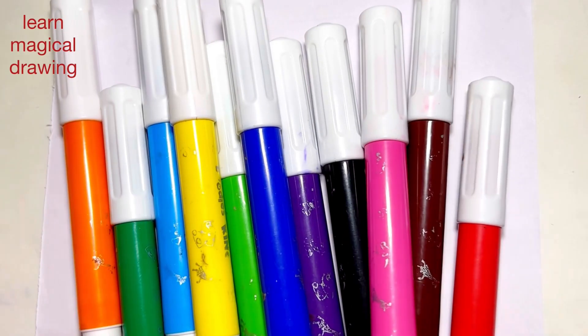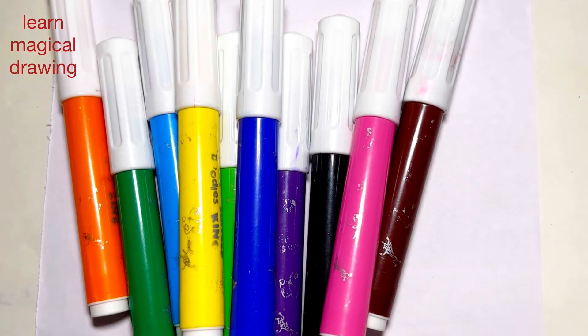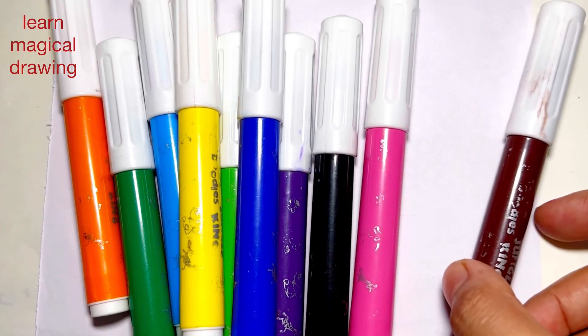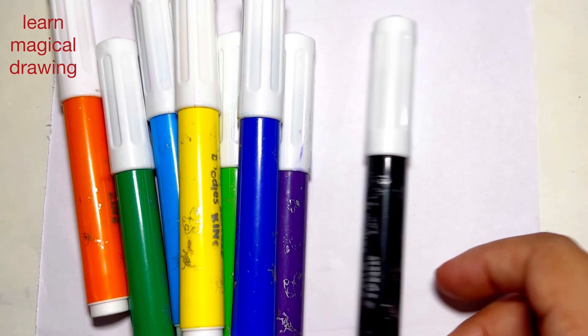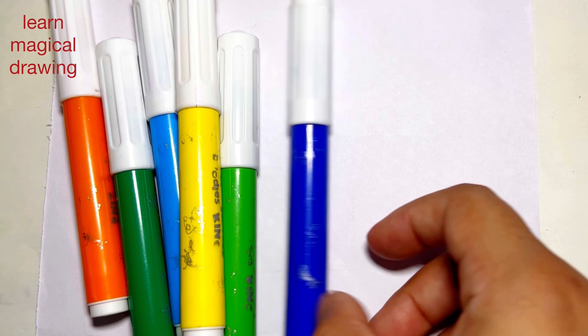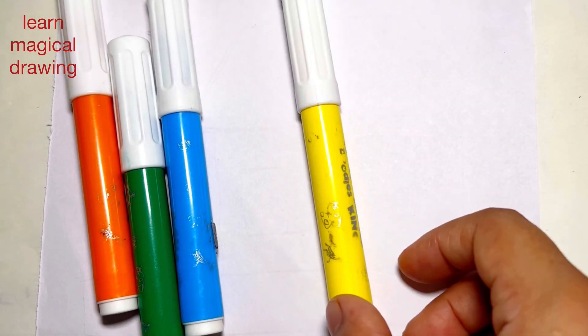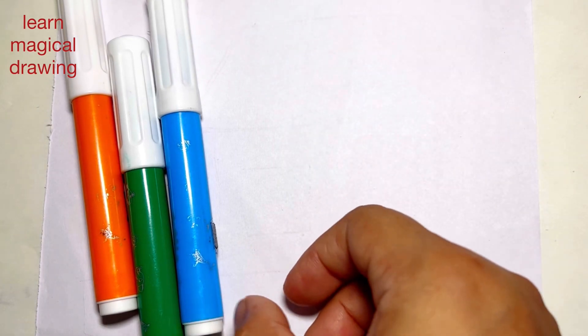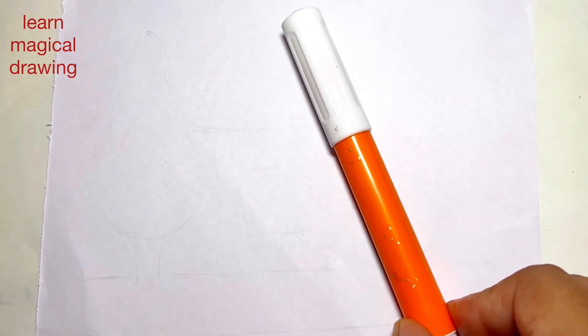Hello everyone, let's learn some colors. Red color, brown color, pink color, black color, purple color, blue color, green color, yellow color, sky blue color, dark green color, and orange color.